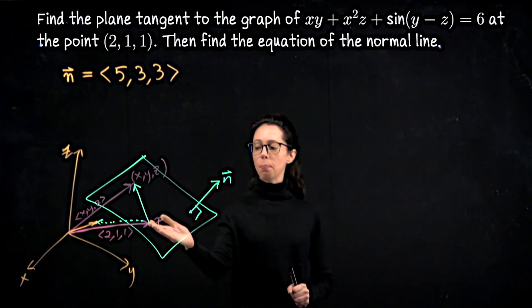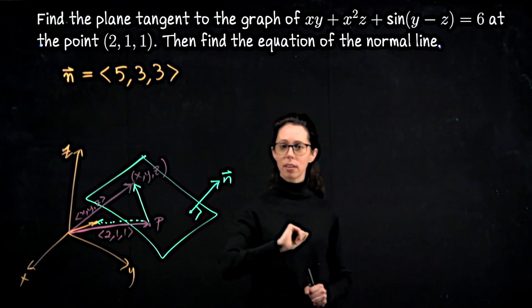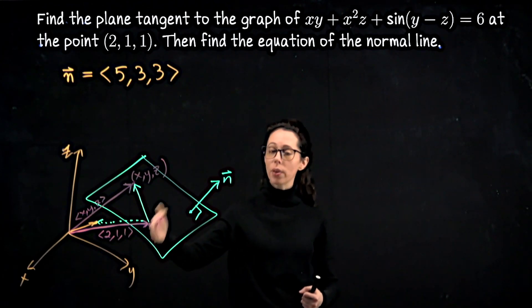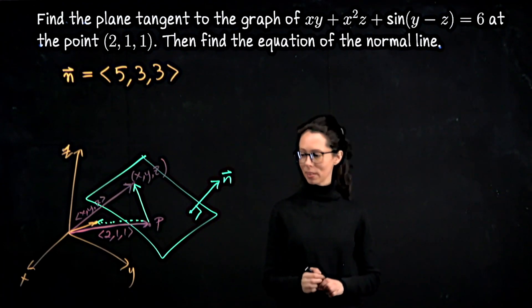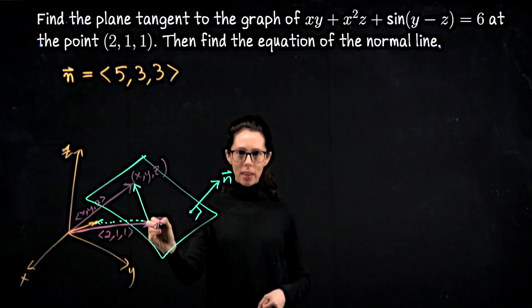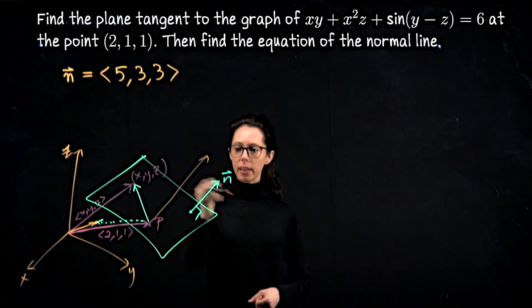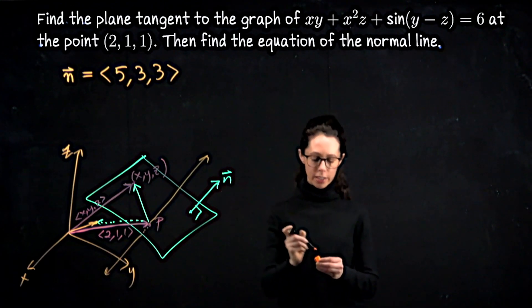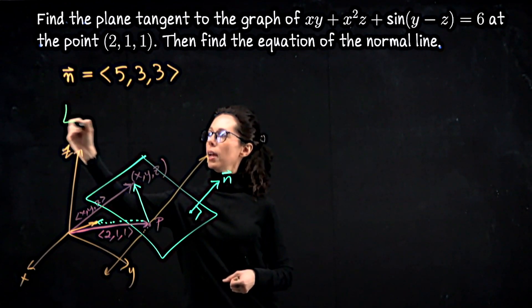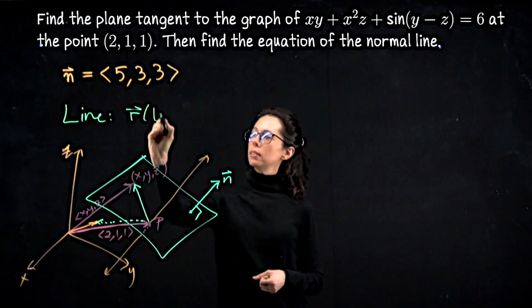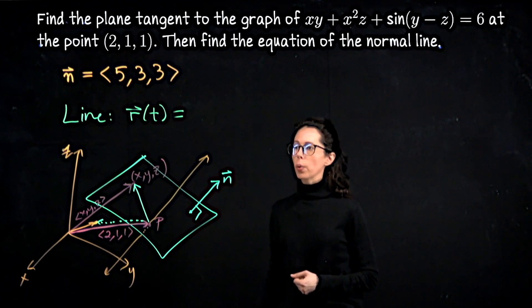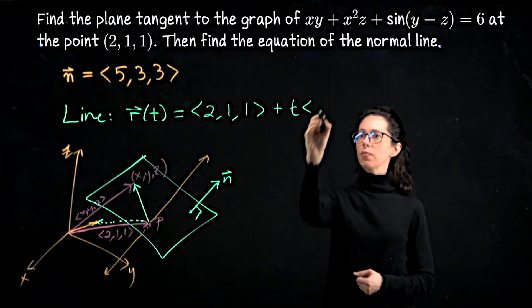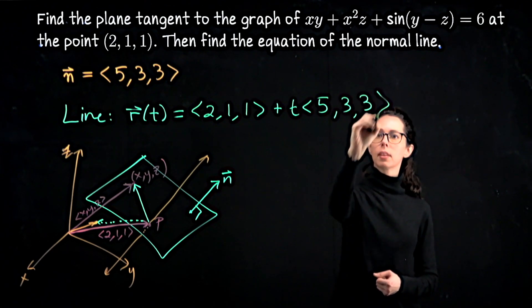We have everything we need to write down the equation of this line immediately. For a plane, you need a point and a perpendicular sense of direction. For a line, you need a point and a parallel sense of direction. Our sense of direction here is the one orthogonal to the plane, so we have that sense of direction. It's this vector n. This line through P perpendicular to this plane is going to be parallel to this vector n. We have our point, we have our direction vector. So our line parametrized like this: it's going to be the point (2,1,1) plus t times the sense of direction, which is <5, 3, 3>.